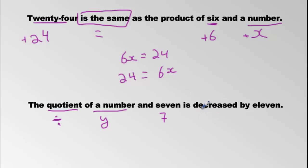Is decreased by 11. So we're going to decrease by 11, minus 11. Decreased by 11, that's code for minus 11. So we have now division of these two. So we're going to put y divided by 7.